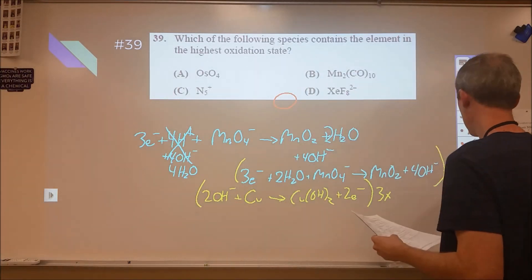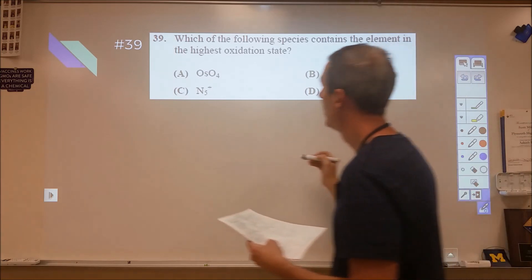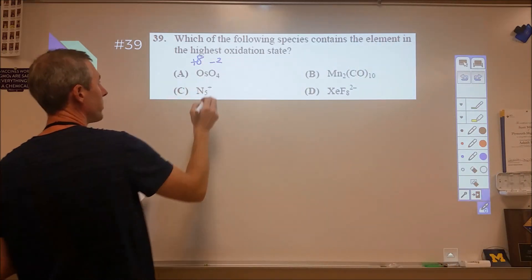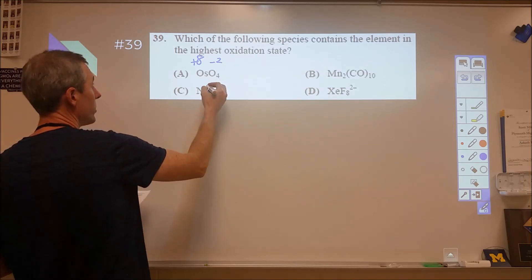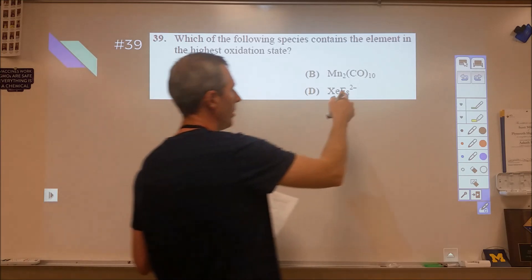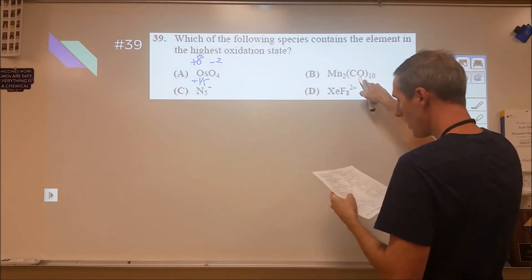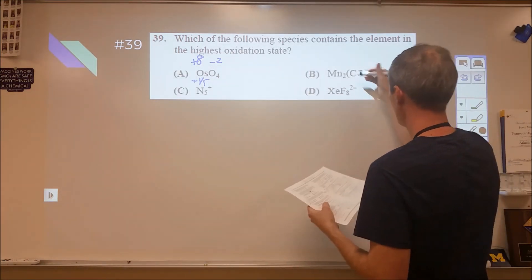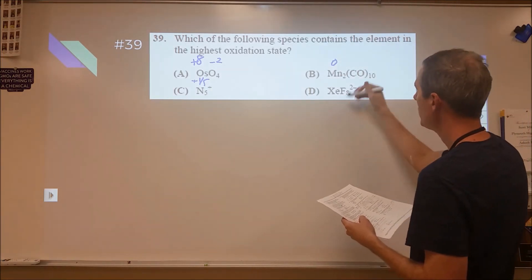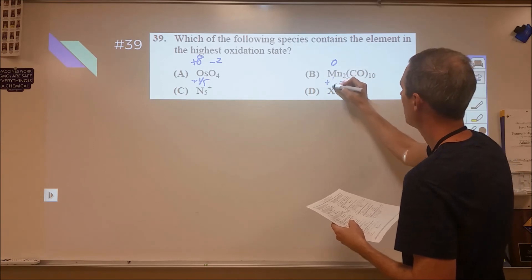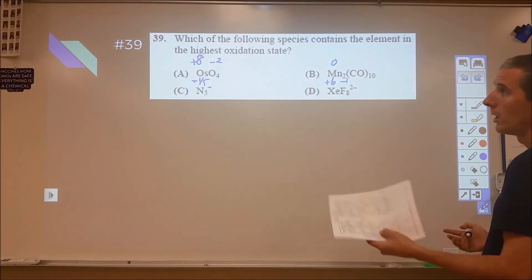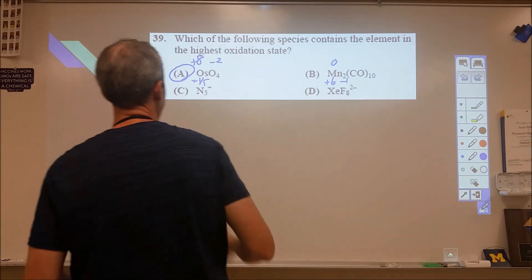Thirty-nine. We're just looking at oxidation states. Nice and simple. So, we have minus two for each oxygen. That means that the osmium is plus eight. Five nitrogens with a plus one charge means that each one is plus one-fifth or plus 0.2. The CO here is neutral, so this would be zero, as far as I know. And the fluoride here is minus one each. So, the xenon would have to be plus six to add up to a total of minus two. So, highest oxidation state would be osmium plus eight.